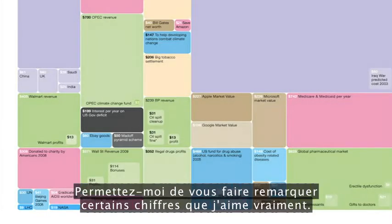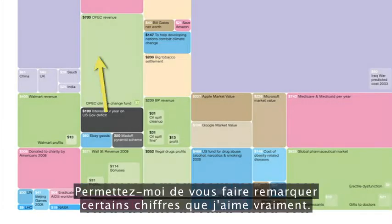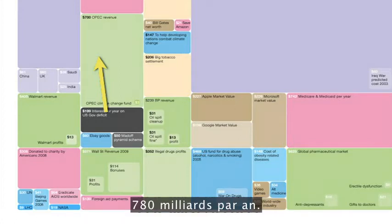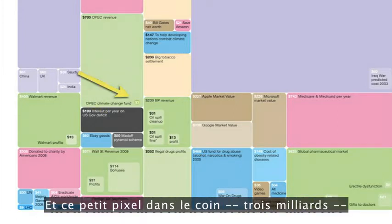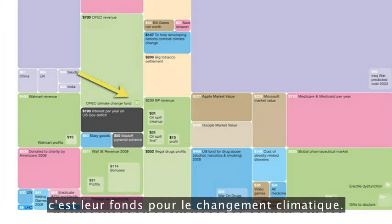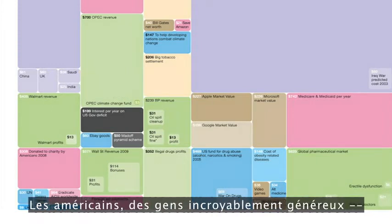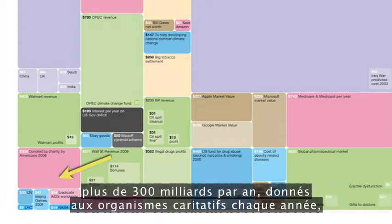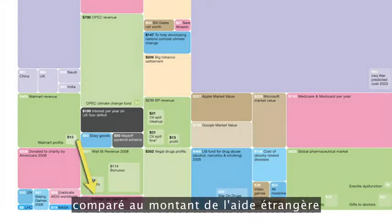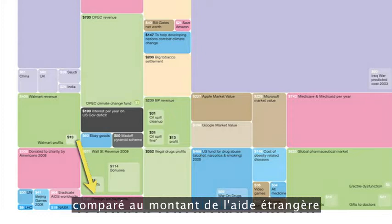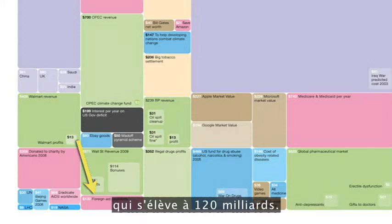Let me point out some that I really like. This is OPEC's revenue, this green box here, 780 billion a year. And this little pixel in the corner, 3 billion — that's their climate change fund. Americans, incredibly generous people, over 300 billion a year donated to charity every year, compared with the amount of foreign aid given by the top 17 industrialized nations at 120 billion.